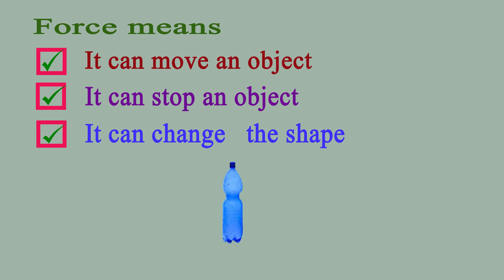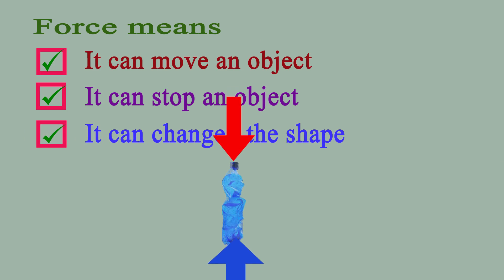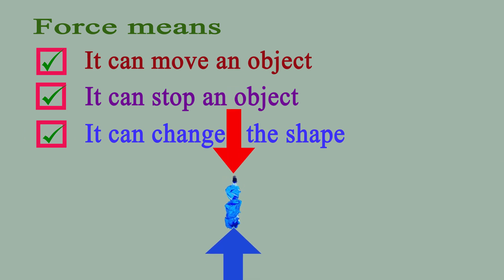Force can change the shape of an object. This is a bottle, and now if we apply force, look — the shape of the bottle is changed. So force helps to change the shape of an object.